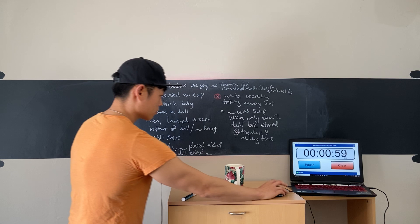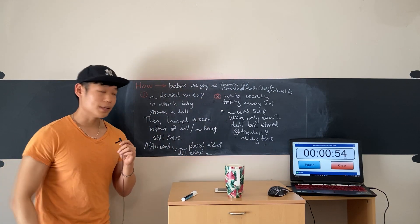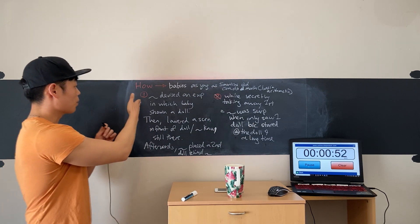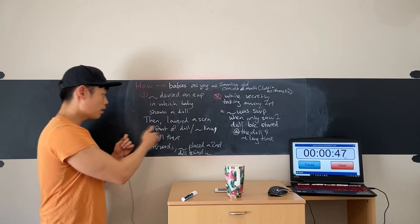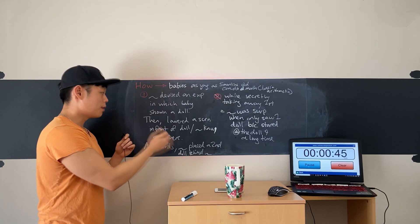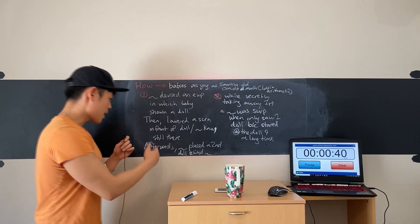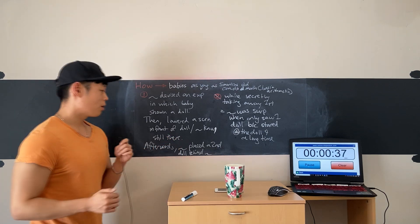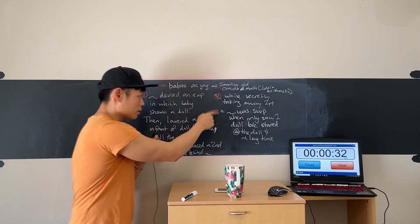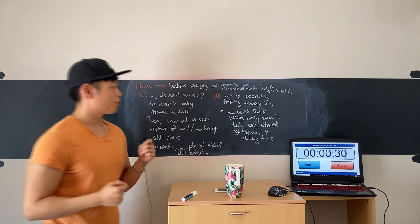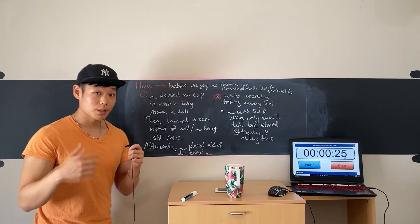The professor gave a lecture about how babies as young as five months old can do basic arithmetic. To begin with, scientists devised an experiment in which a baby was shown a doll. Then the researchers lowered a screen in front of the doll, but the baby still knew that the doll was there. Afterwards, these researchers placed a second doll behind the screen while secretly taking away the first doll. Needless to say, the baby in this experiment was extremely surprised when he only saw one doll.